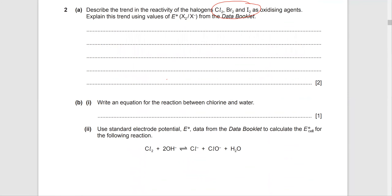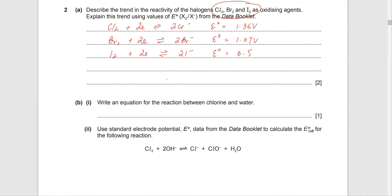Let's go back and write down those values. Cl2 plus two electrons in equilibrium with 2Cl⁻, E0 = 1.36 V. Then Br2 plus two electrons in equilibrium with 2Br⁻, E0 = 1.07 V. And I2 plus two electrons in equilibrium with 2I⁻, E0 = 0.54 V. The E0 values decrease down the group.